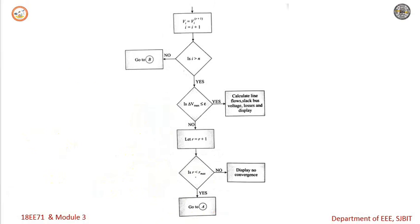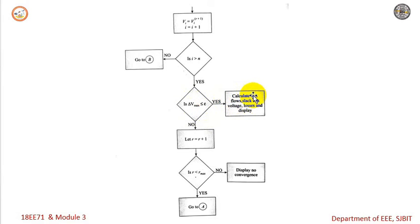Next, similarly compute the next buses and update V_i. Increment the bus counter: i equals i plus 1. Once i is greater than n, where n is the number of buses in the system, check if delta V max is within the tolerance value. If yes, stop and calculate the line flows, slack bus voltage, losses, and display the results. If not within tolerance, proceed to the next iteration with r equal to r plus 1.